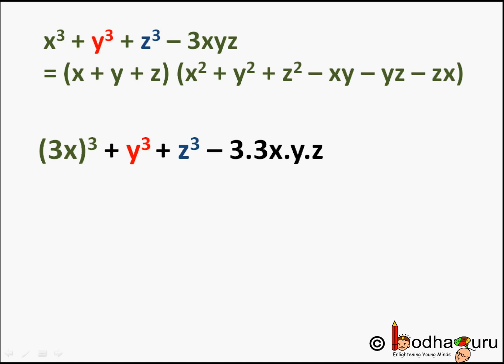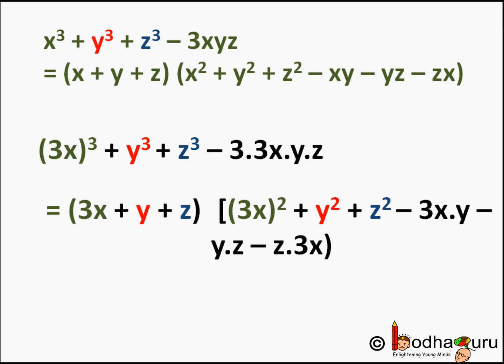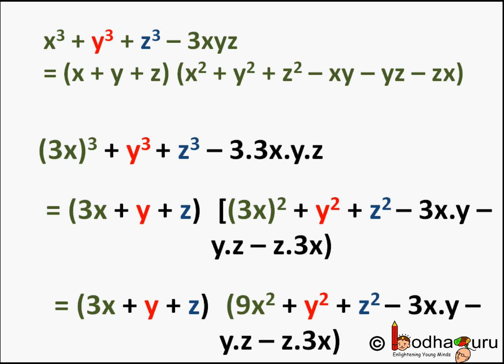And the other factor would be (3x)² + y² + z² - 3x·y - yz - z·3x. So we need to put 3x instead of x in the identity. Simplifying further, these are the two factors of 27x³ + y³ + z³ - 9xyz.